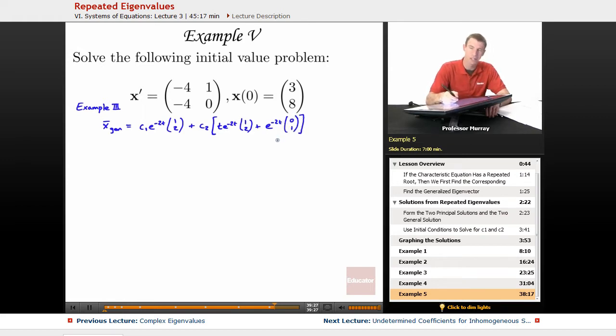We did some work in Example 3 to get to that point, so I'm not going to repeat that now. Now, let's see how this works with our initial condition, because this is the new part of this problem. x(0) = (3, 8). That means I'm going to plug in t = 0 here.